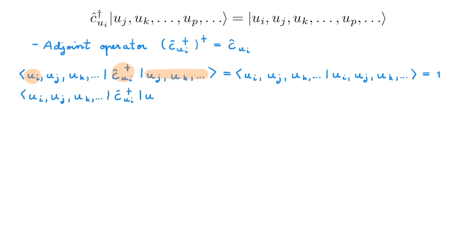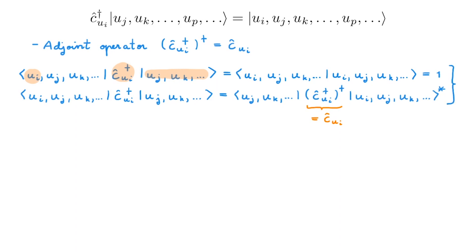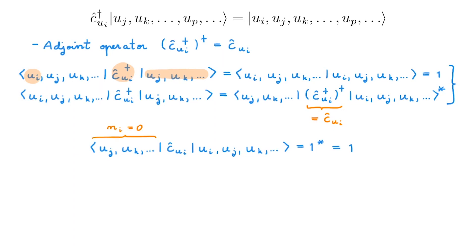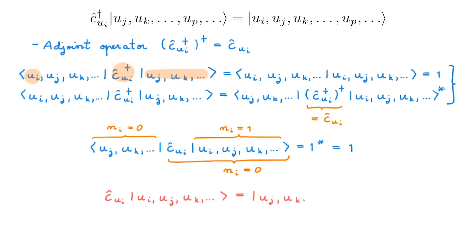Using the conjugation property of the scalar product we can rewrite the matrix element, and using the fact that the adjoint of an adjoint gives the original operator, we get c_ui here. Equating the two expressions implies that the matrix element of the adjoint of the creation operator is equal to one. This means that c_ui acting on a Fock state with ni equals one must give the Fock state in which the particle in state ui has been removed. So c_ui removes the particle occupying single particle state ui, allowing us to go from F_n to F_{n-1} — for this reason we call c_ui the annihilation operator.